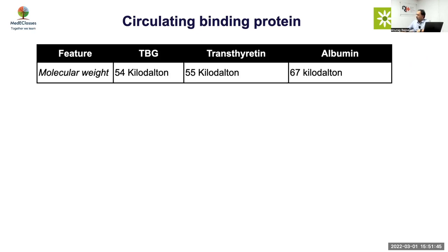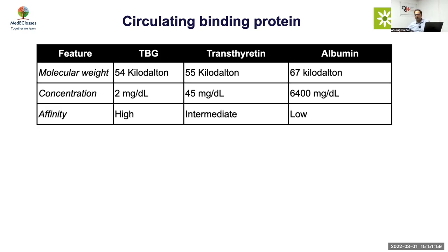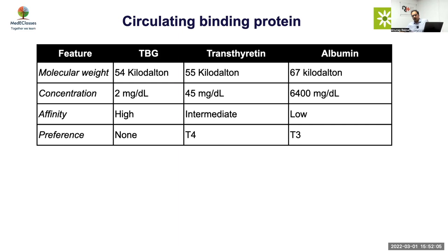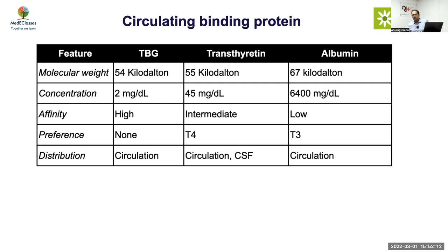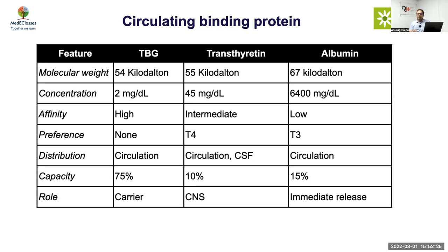To summarize and compare all three: TBG, albumin, and transthyretin are equal in size, but the concentration is very low for TBG and very high for albumin. Albumin can bind much more thyroid but affinity is highest for TBG, so albumin releases it immediately. TBG binds both T3 and T4; transthyretin mainly T4; albumin mainly T3. Transthyretin is important for CSF and brain function. 75% of thyroid is strongly held by TBG, 15% by albumin. TBG is the major carrier; albumin is the provider.